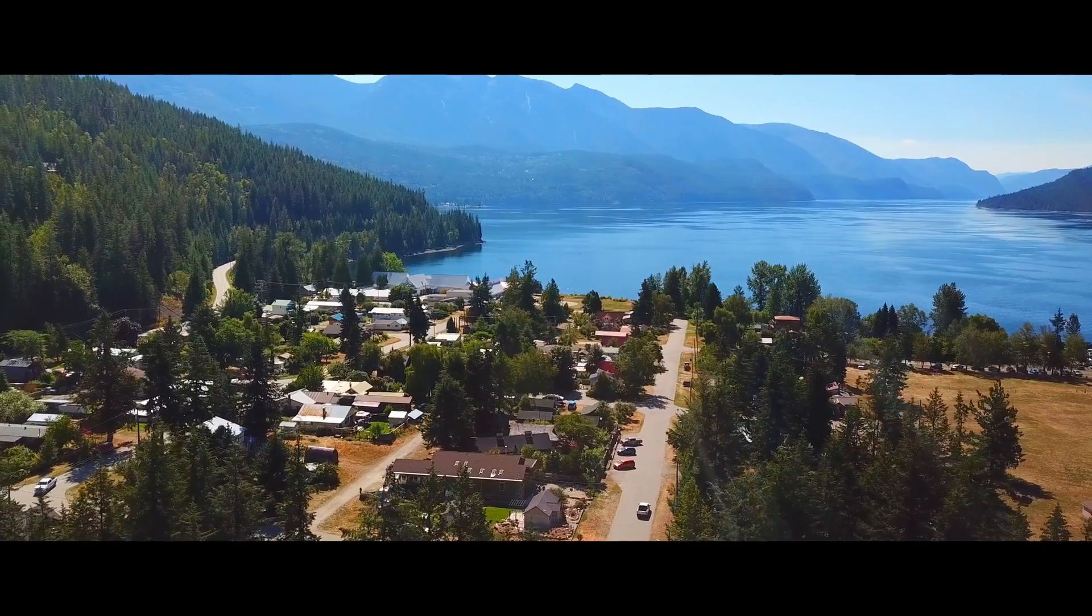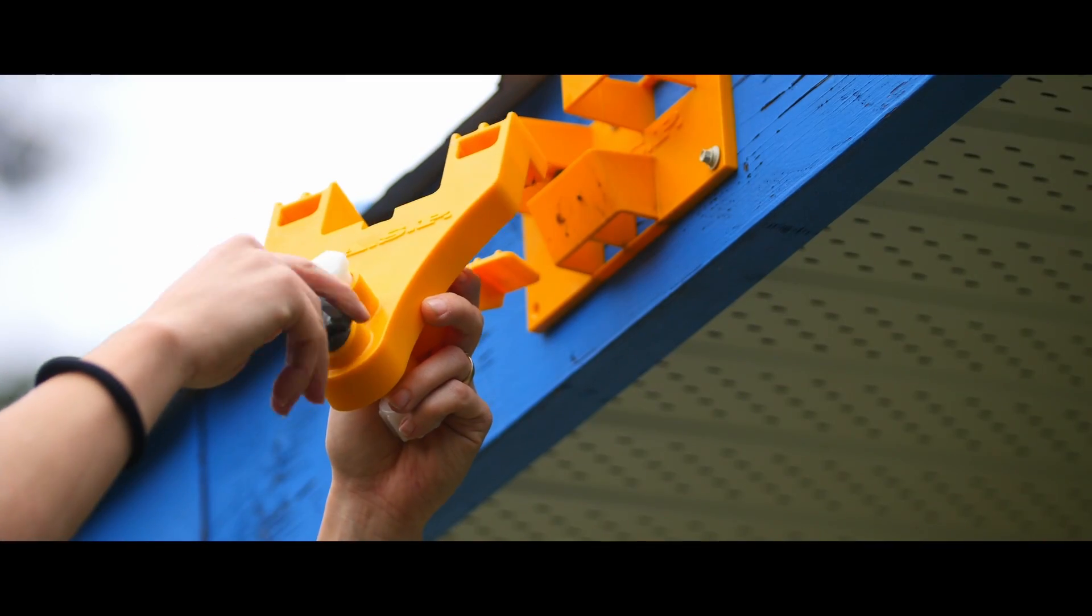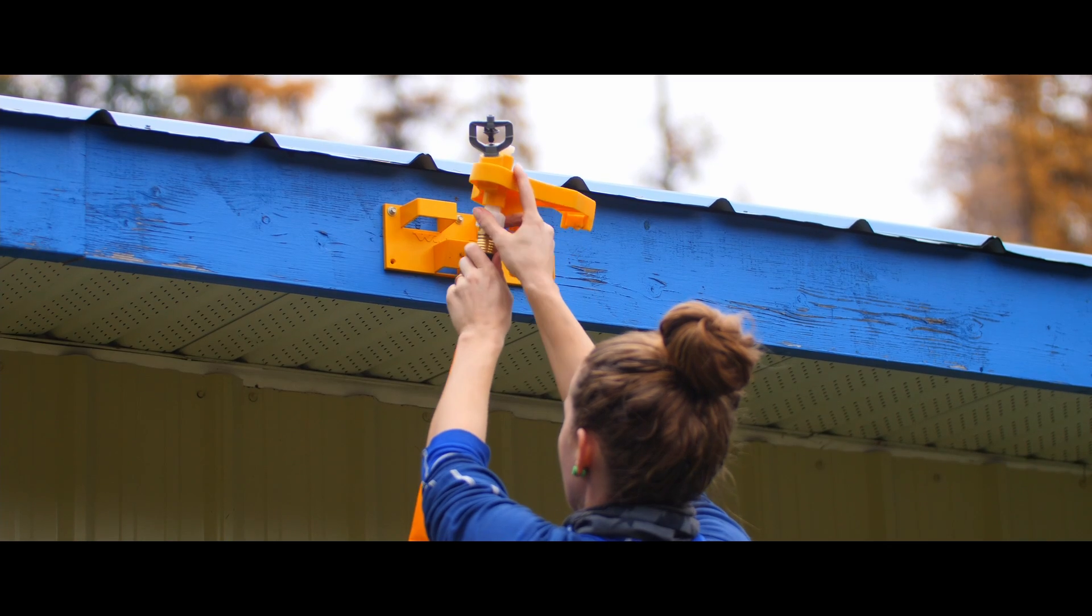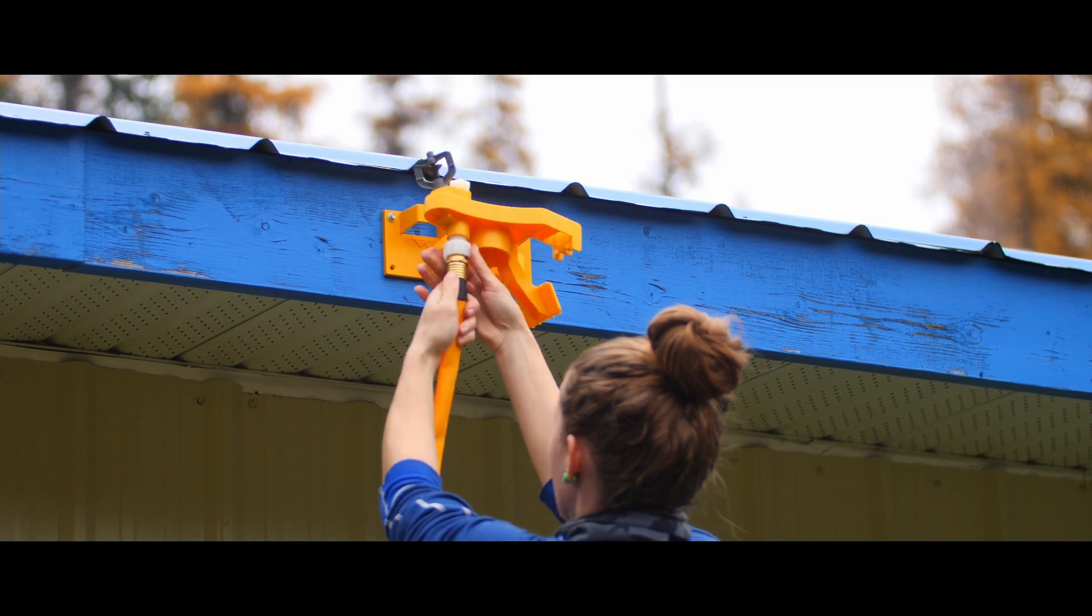To install the sprinklers, attach the sprinkler head on the angle you desire and close up the other hole with the provided plug. Attach the hose to your sprinkler and your water outlet.